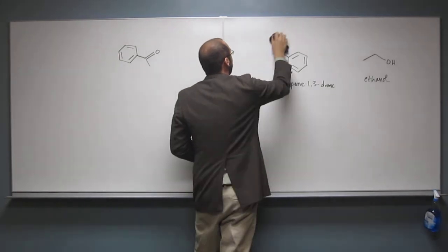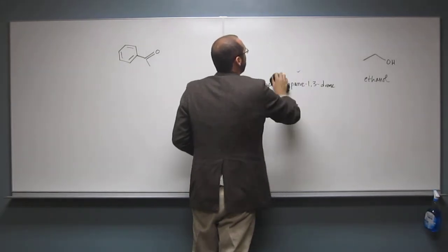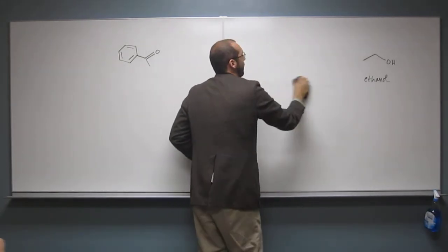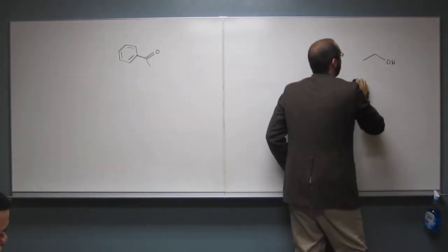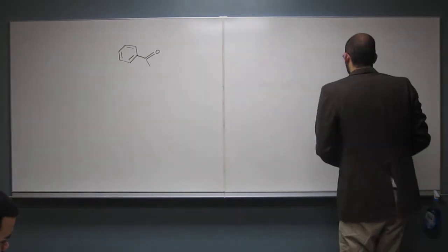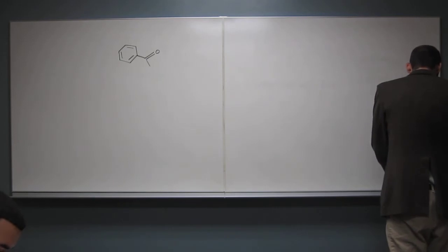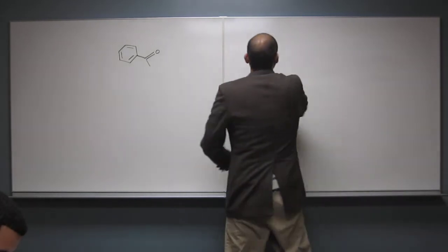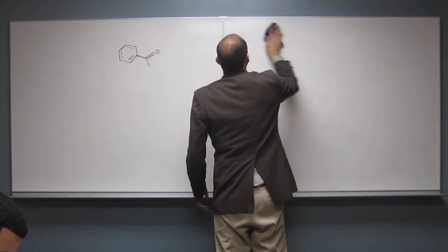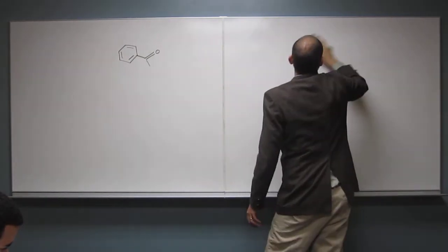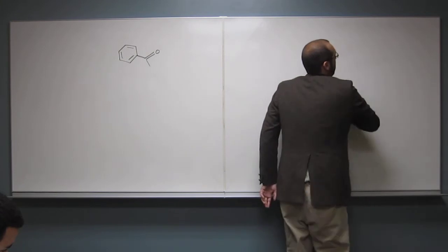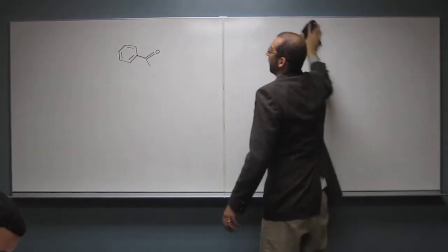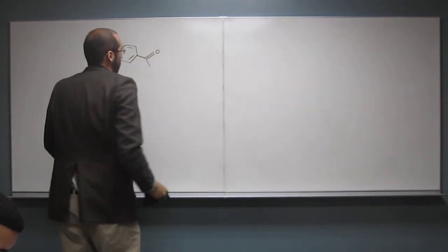So you also have to remember where you're going. If you forget that you're making that diketone, it's going to be very difficult to actually get there through your mechanism. So keep that in mind when you're drawing stuff. You always want to keep looking back to where you're going.